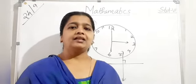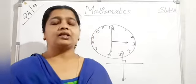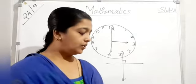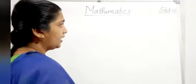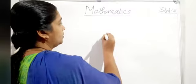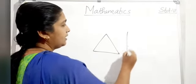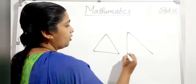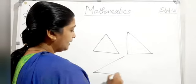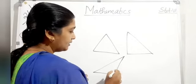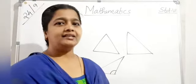If every angle of a triangle is acute, that is known as an acute angled triangle. An angle of measure 90 degrees is called a right angle triangle. If one angle is greater than 90 degrees, that is one obtuse angle, it is known as an obtuse angled triangle.